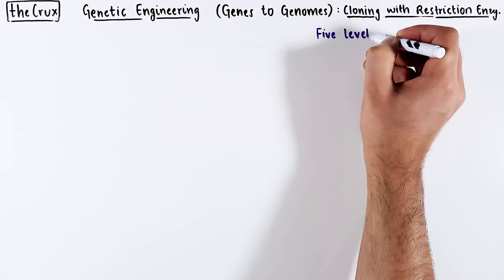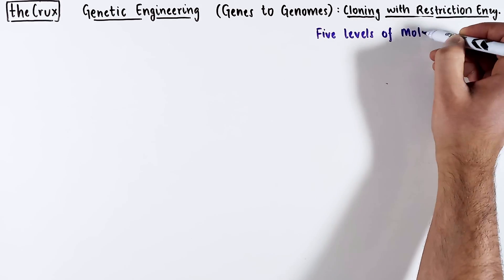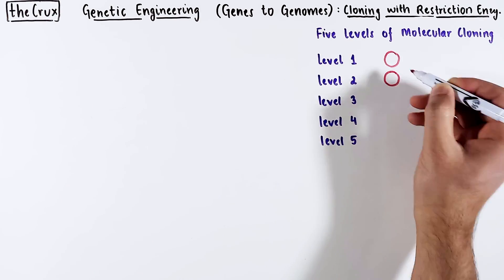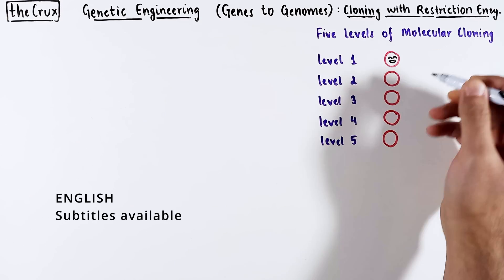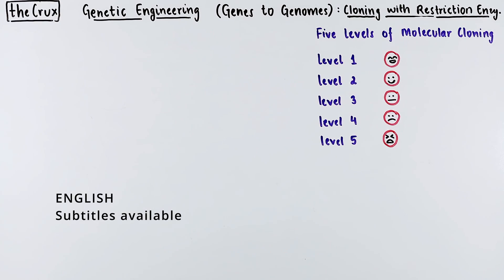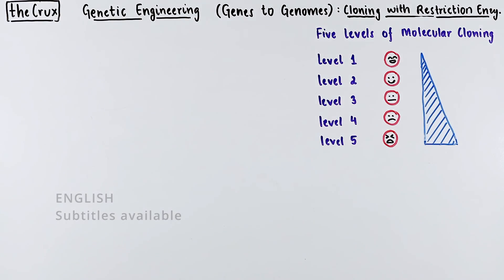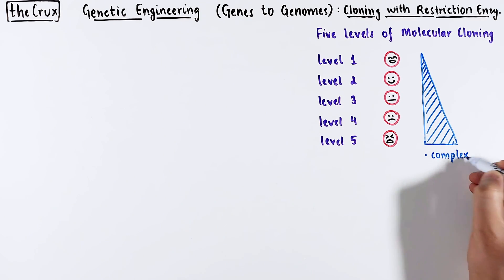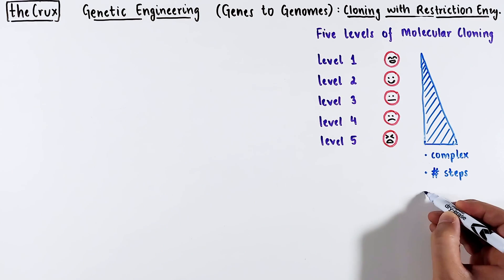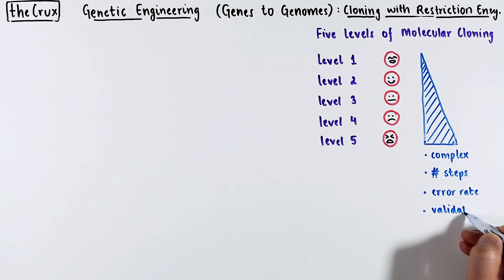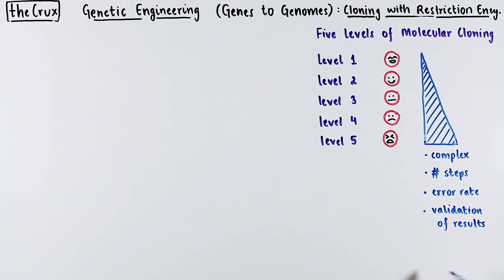You can understand traditional molecular cloning if you comprehend these five levels. Just like a video game, an increase in level means higher difficulty. The higher the level, the more complex things get. There are more experimental steps, the error probability increases, your results require more validation, and even the vectors get complicated.